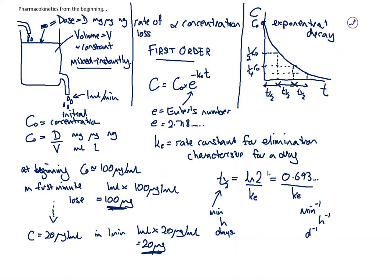When you're using this formula, the KE and the T should have matching units. If your KE is in minutes to the minus one, time should be in minutes. If KE is hours to the minus one, time should be hours.